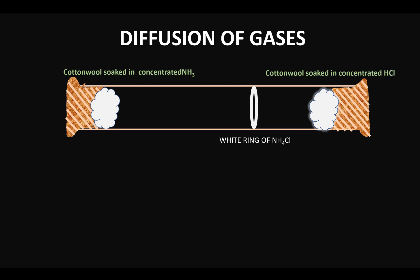is of ammonium chloride. So now there are two questions that we need to answer. One: why is the white colored ring of ammonium chloride formed in the tube? Secondly, if the ring is formed,